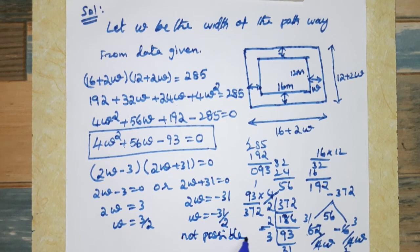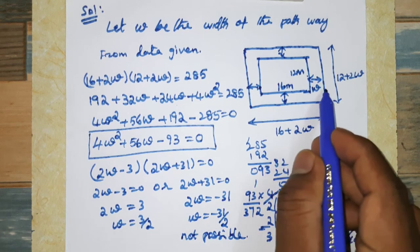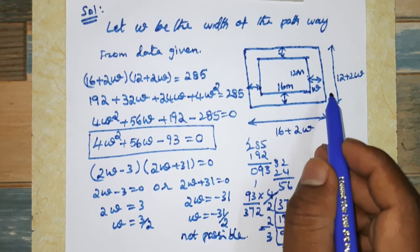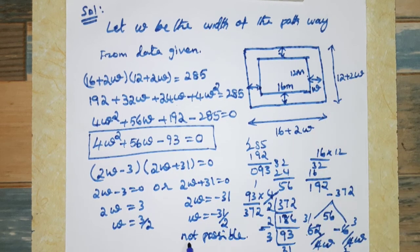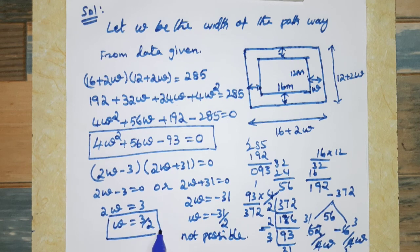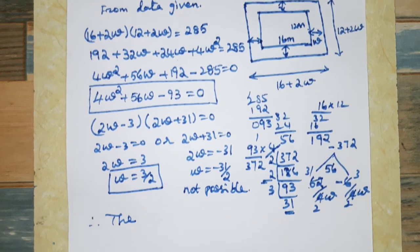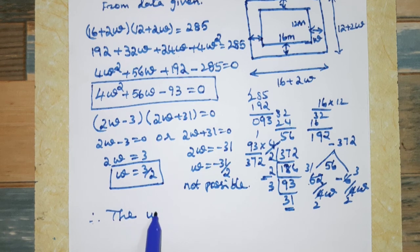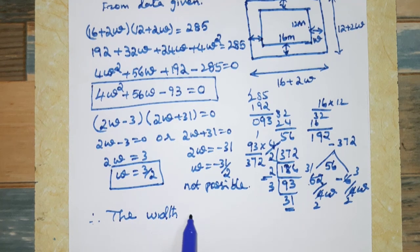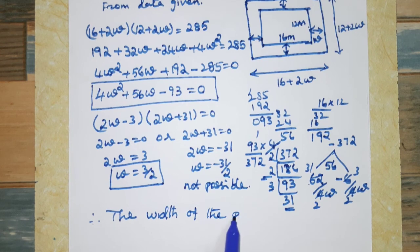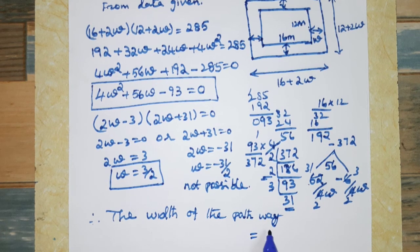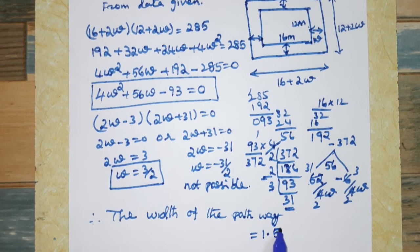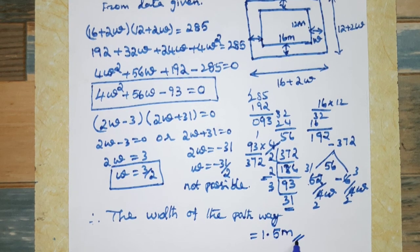Since W is the width of the pathway, it must be positive. Therefore, the width of the pathway equals 3/2 which is 1.5 meters. That is the answer. Thank you.